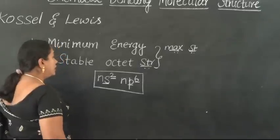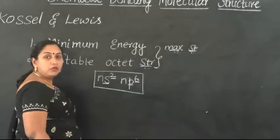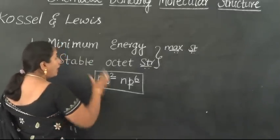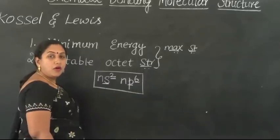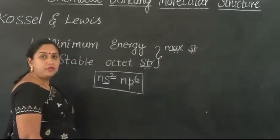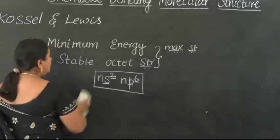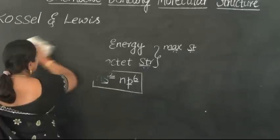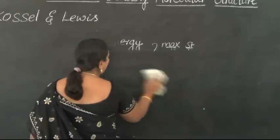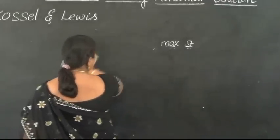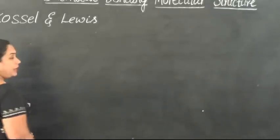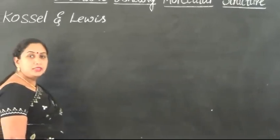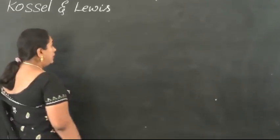The second reason is to possess minimum amount of energy. After these two scientists gave us the very important reasons for elements to participate in various reactions, different types of bond formations are discussed to understand how elements of the periodic table try to possess minimum energy and attain the stable octet structure.